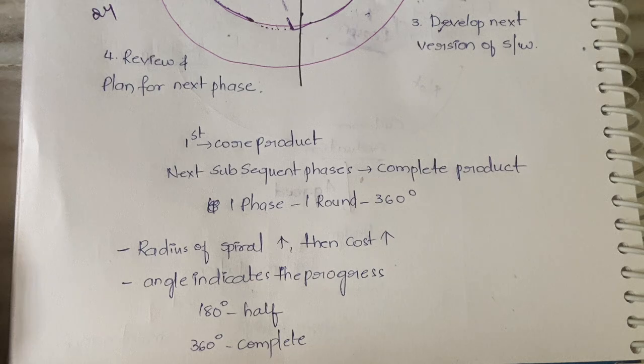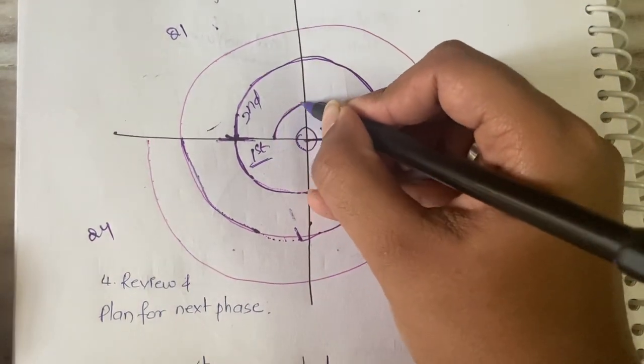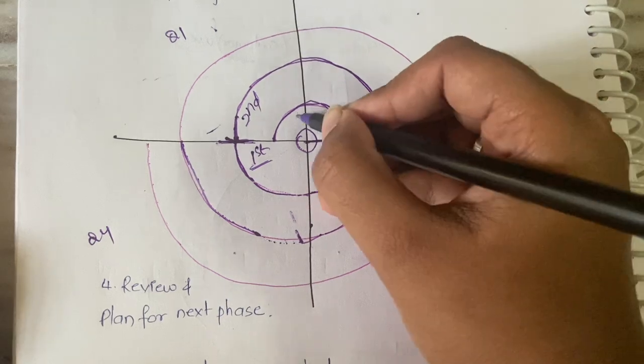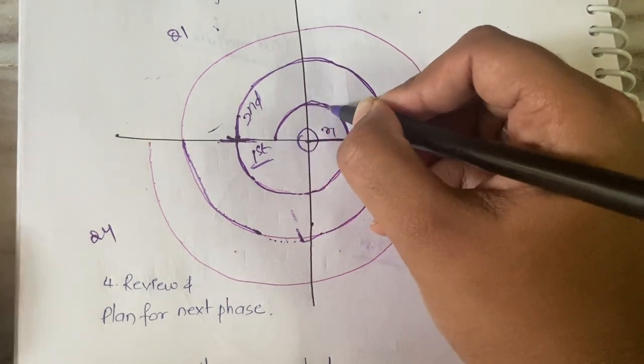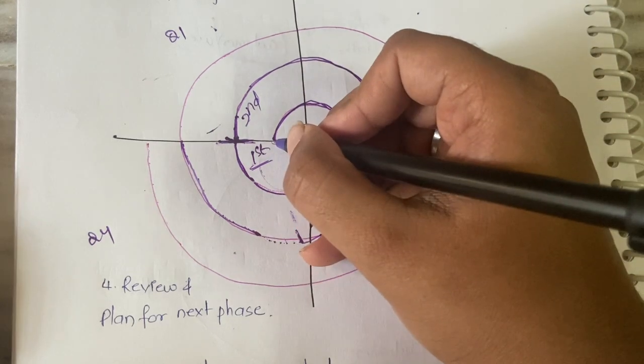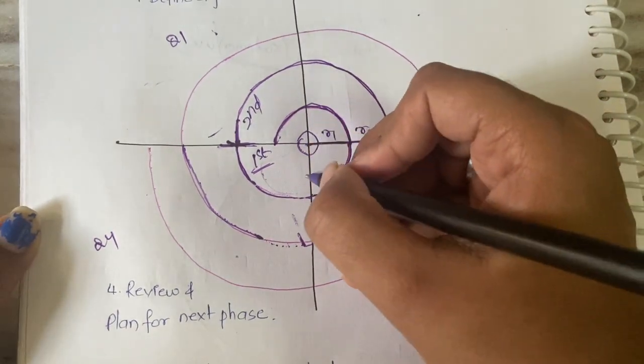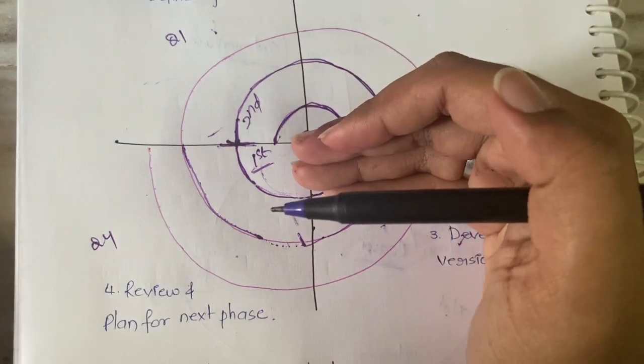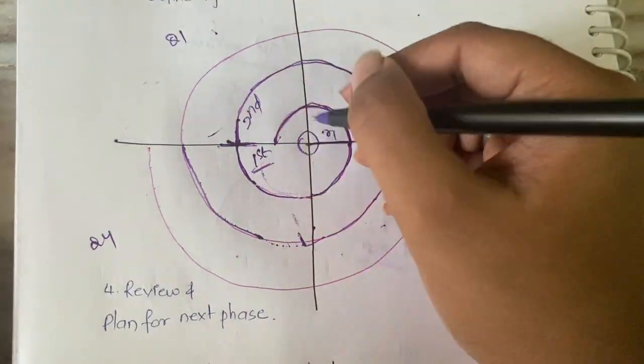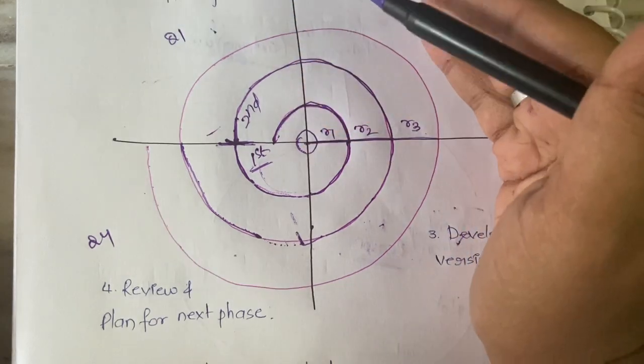What do you mean by the angle? Suppose it has traveled this way - how much angle has it covered? 180 degrees, right? So half of the task is done, more half is yet to complete. Suppose it has traveled this way, then 270 degrees - that is, three-fourths of the task is completed, one-fourth is more left. Like that, the angle will represent the progress of the task. Got it?